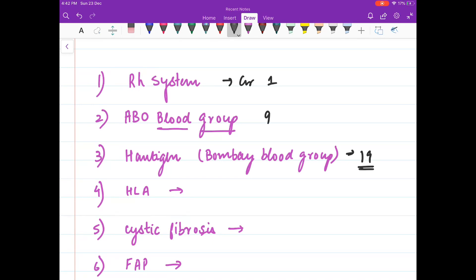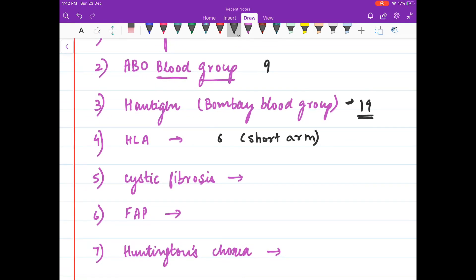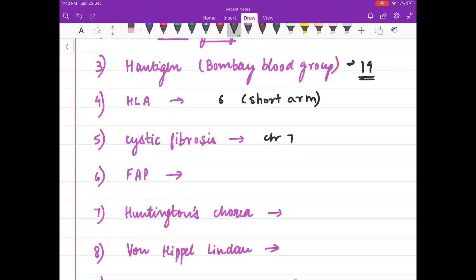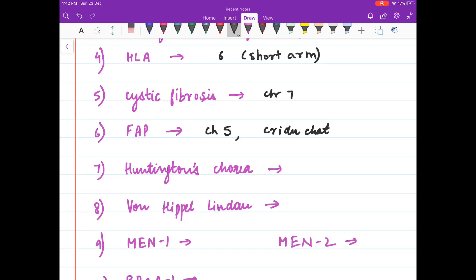HLA is present on chromosome 6 short arm. Cystic fibrosis, chromosome 7. Familial adenomatous polyposis, chromosome 5. What other syndrome do you know by chromosome 5? It is Cri-du-chat syndrome.